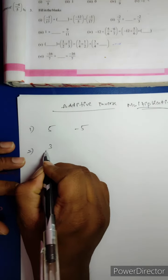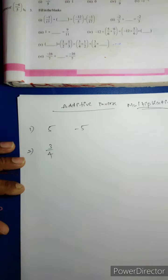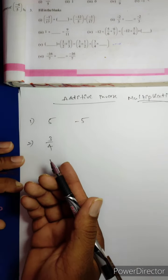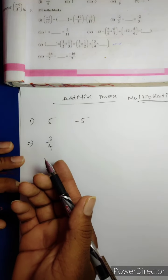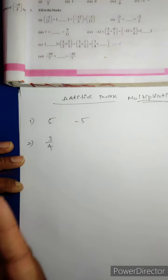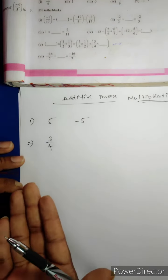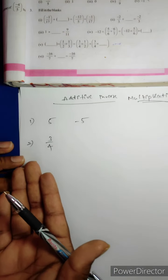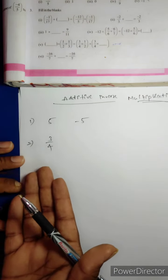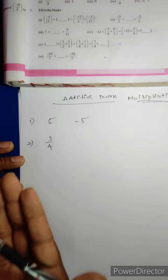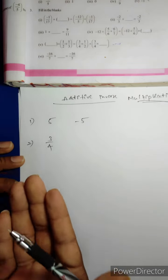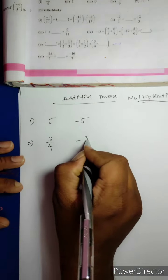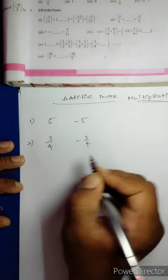Second one: 3/4. What is the Additive inverse of 3/4? There is no minus symbol, so 3/4 is a positive fraction — a positive rational number. So its additive inverse is −3/4.